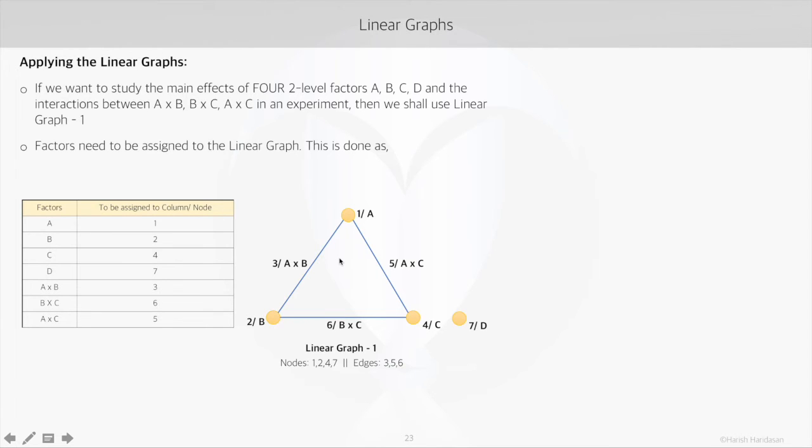So, the nodes of the linear graph will represent the factors. Like 1 can represent A, 2 can show B, 4 can be C, 7 can be D. And the interaction between A and B can be shown by 3, interaction between A and C can be shown by 5.